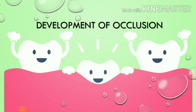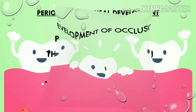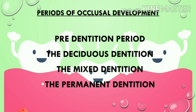Welcome back. Today we'll be discussing an important topic: the development of occlusion. The periods of occlusal development have been divided into four stages — first is the pre-dentition period, followed by the deciduous dentition period, followed by the mixed dentition period, and finally the permanent dentition period.